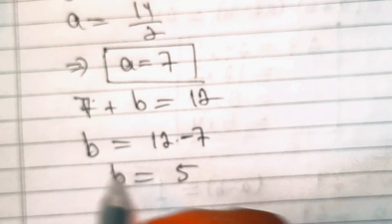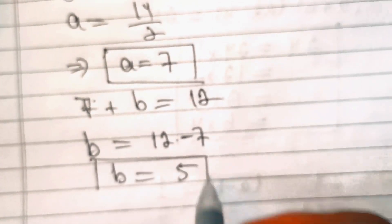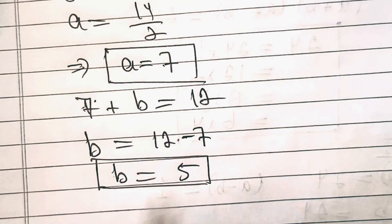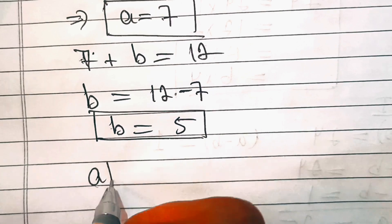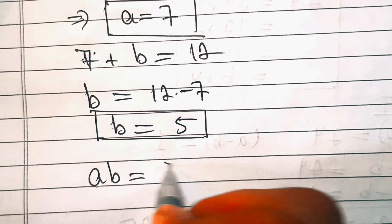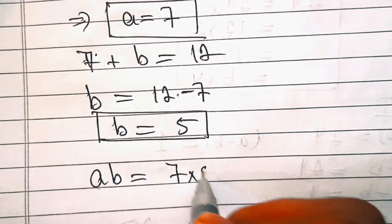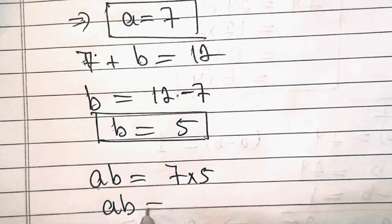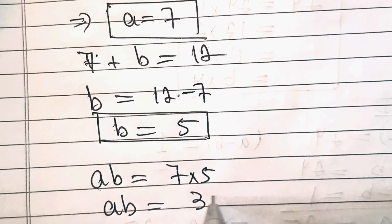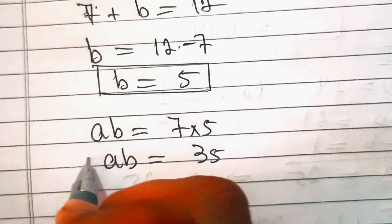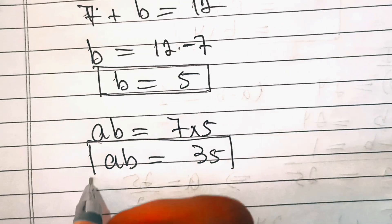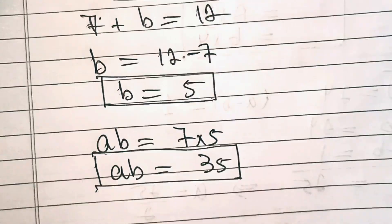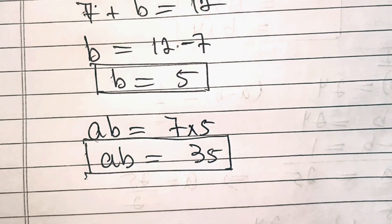So we got a equals 7 and b equals 5. If we multiply these two: a times b equals 7 times 5, which equals 35. This is the true case because the given value of ab is 35.